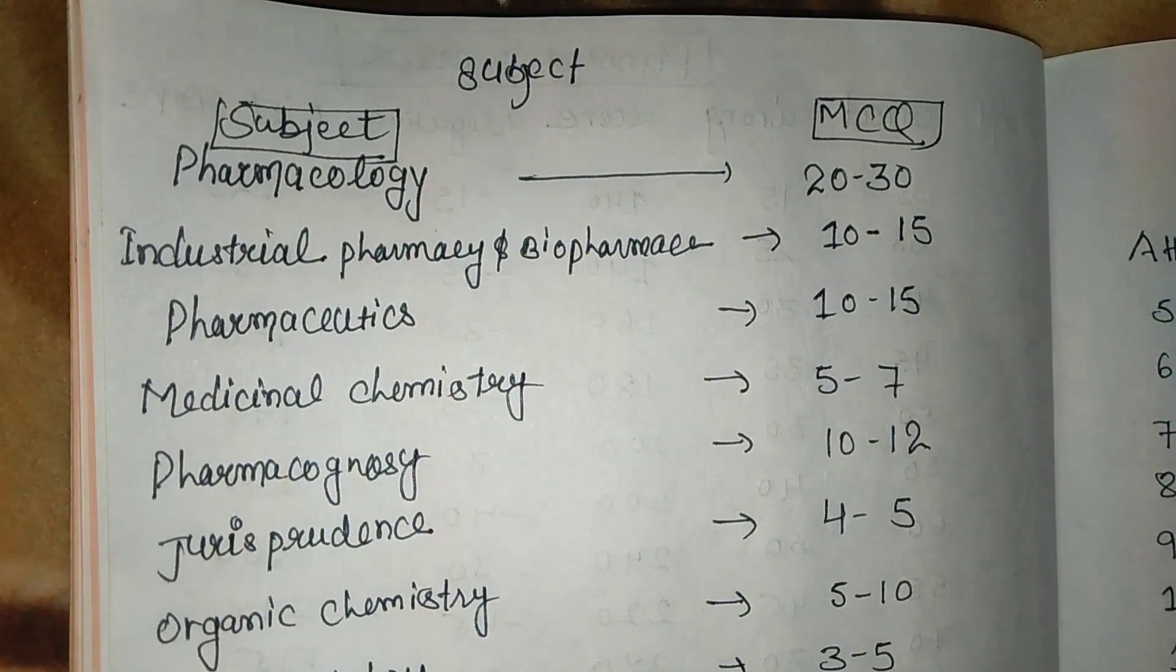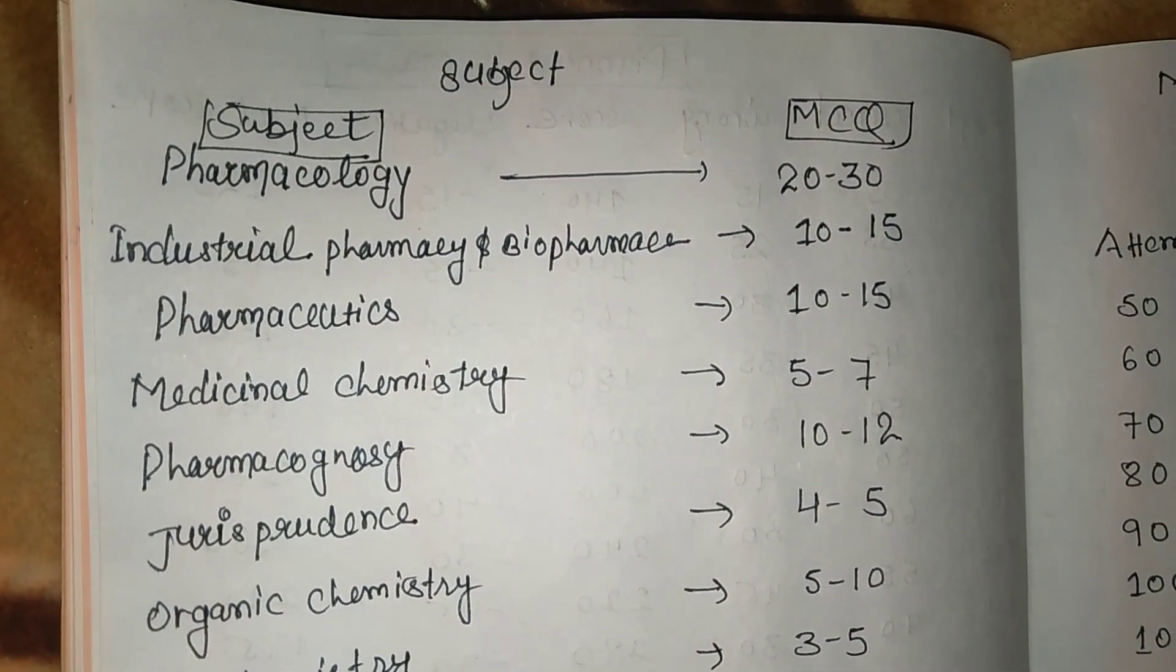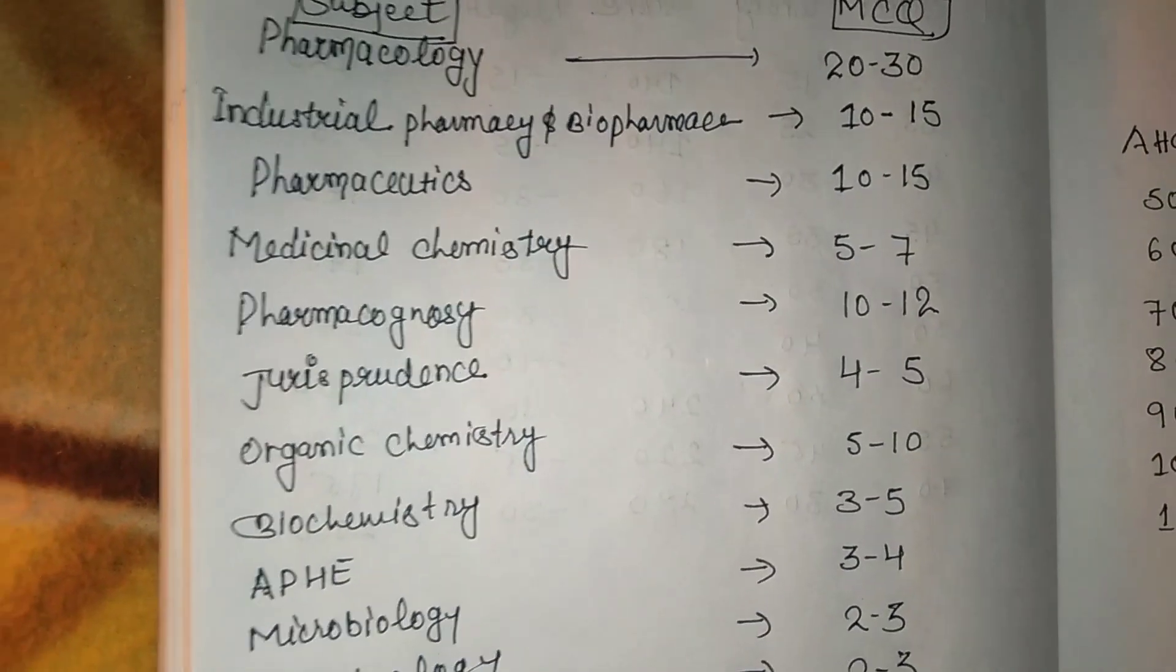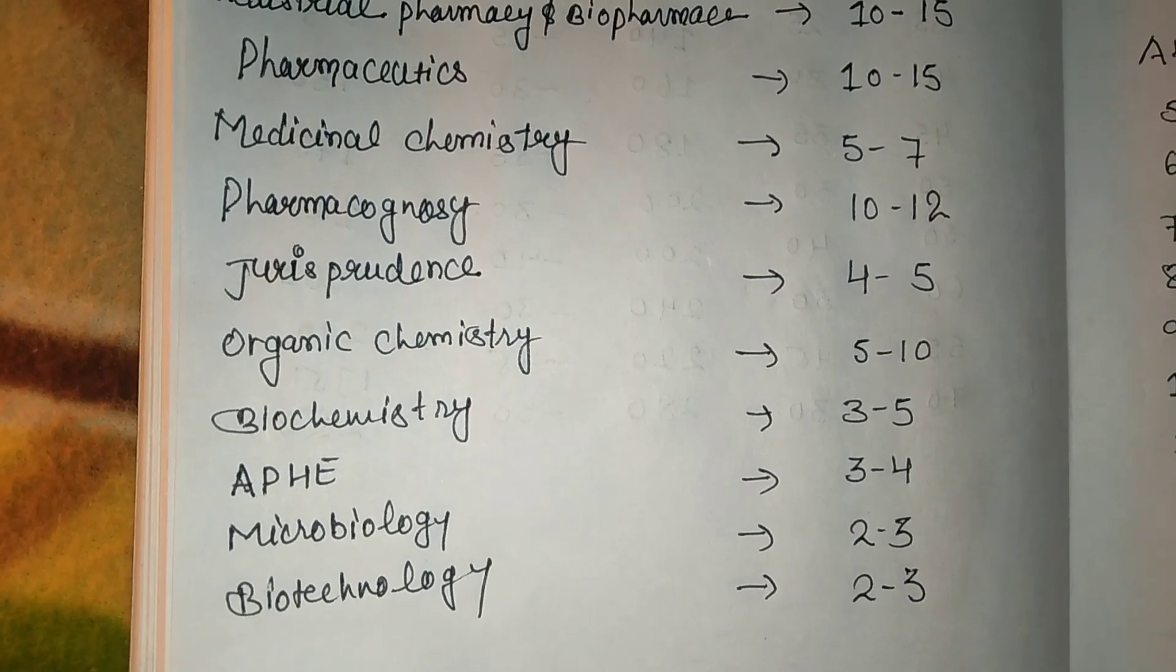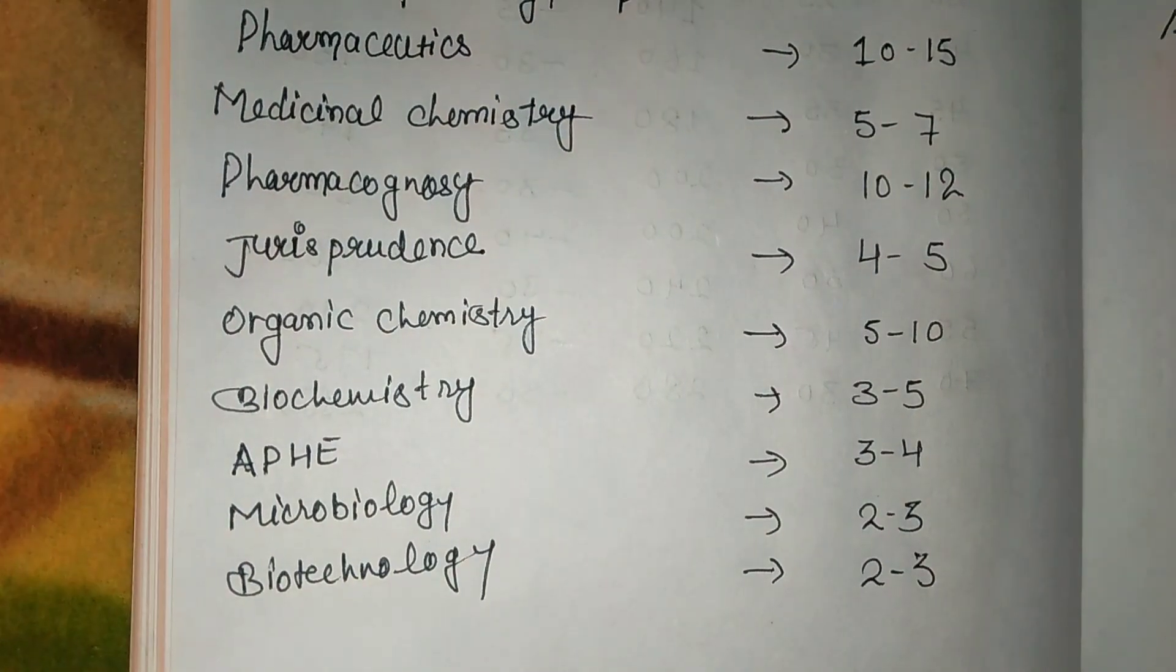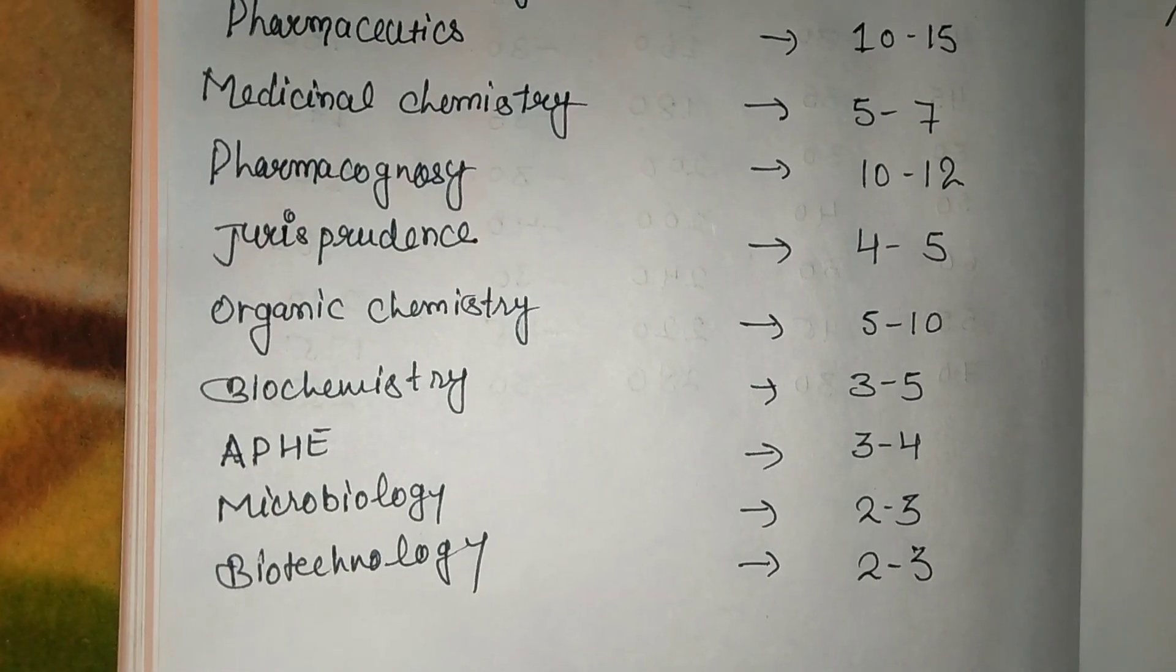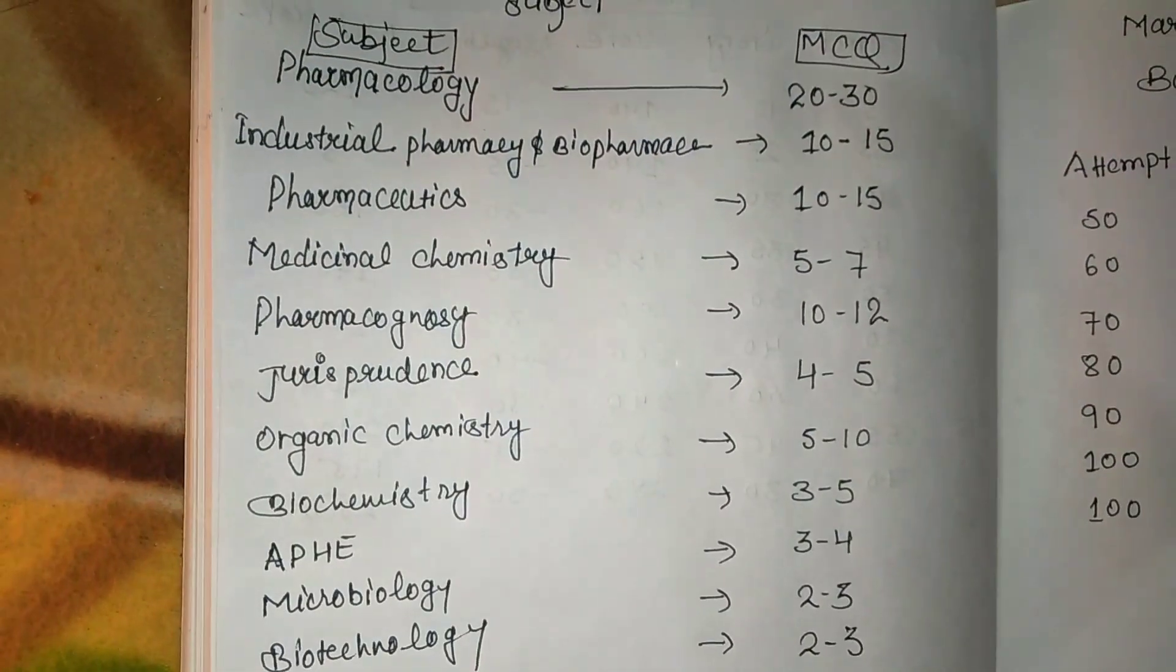5 to 7 MCQs. Pharmacognosy: 10 to 12 MCQs. Jurisprudence: 4 to 5 MCQs. Organic chemistry: 5 to 10 MCQs. Biochemistry: 3 to 5 MCQs. APHE (Anatomy, Physiology, and Health Education): 3 to 4 MCQs. Microbiology: 2 to 3 MCQs. Biotechnology: 2 to 3 MCQs.